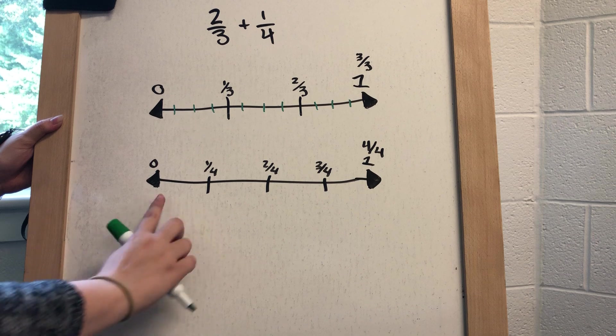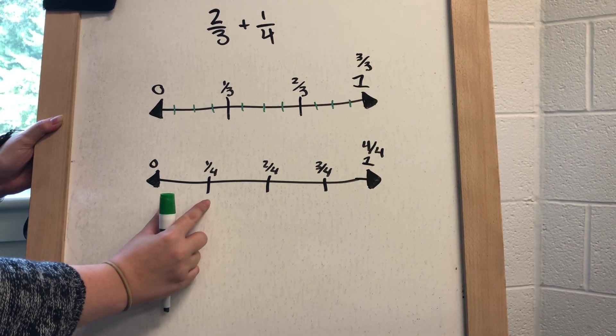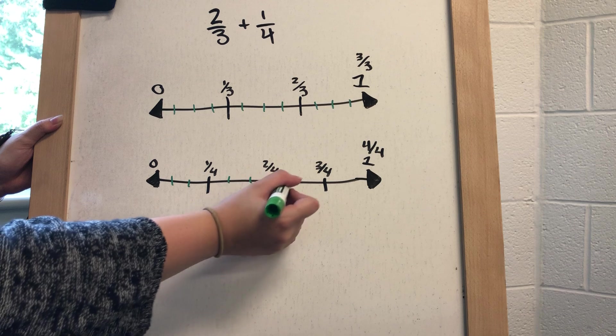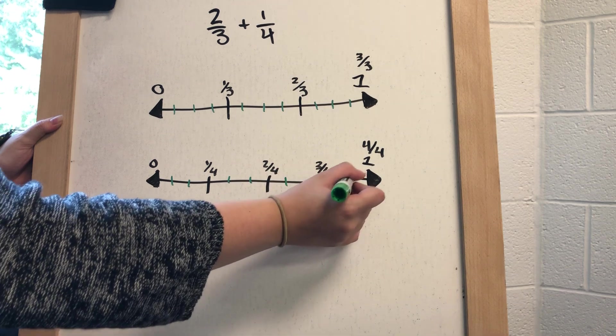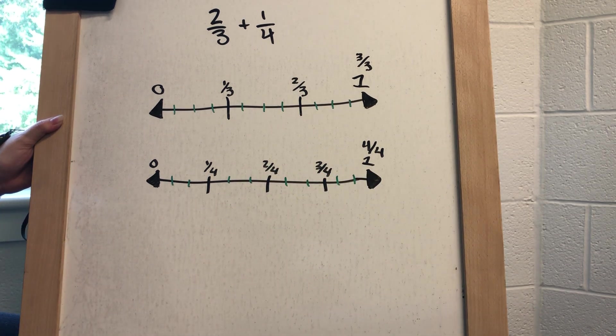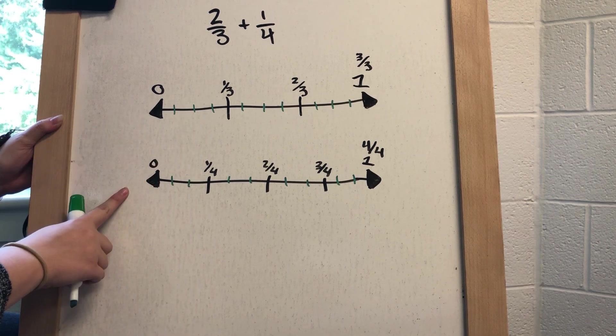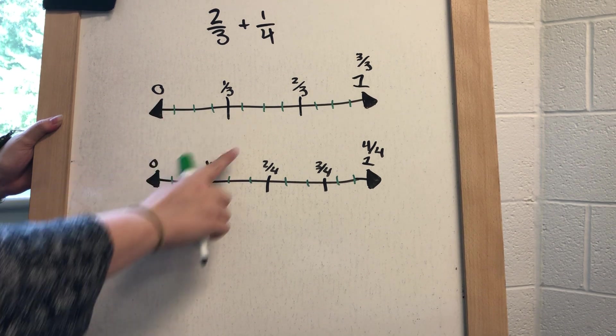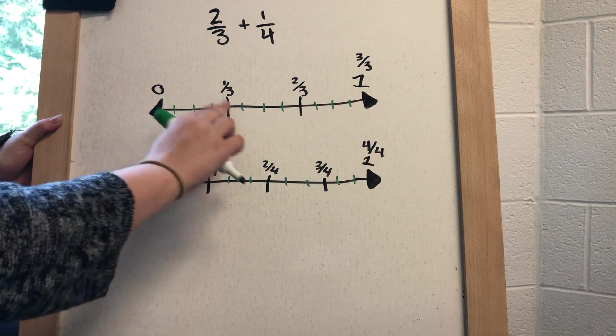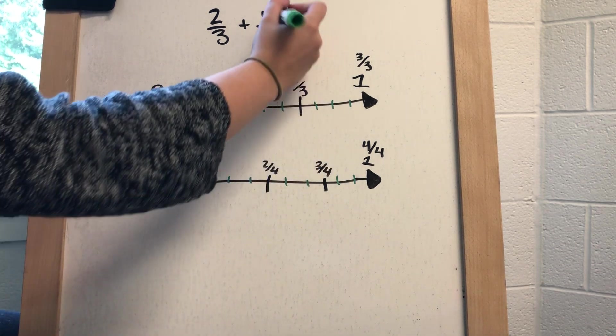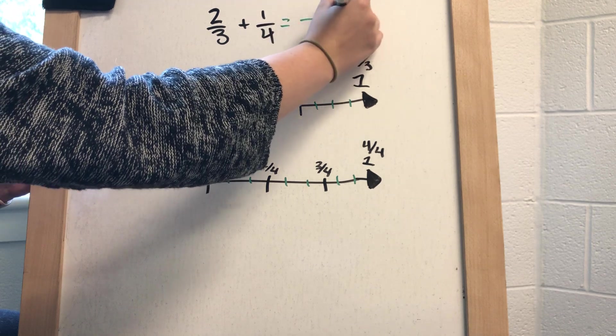Then I'm going to do the opposite down here and for every fourth section, I'm going to split that into thirds so that I can have even intervals now. If you look at my two number lines now, the green and the black lines now match up and we are using the same intervals. Therefore, we are using the same denominators.